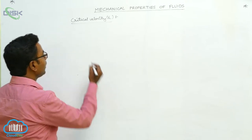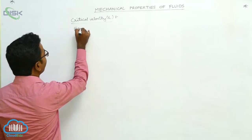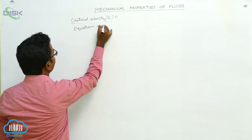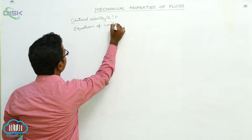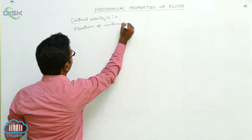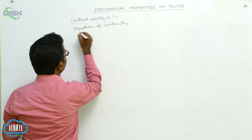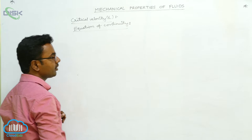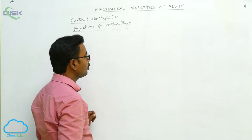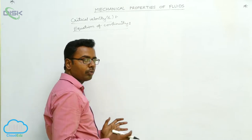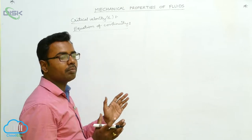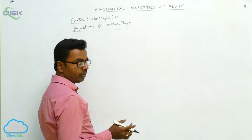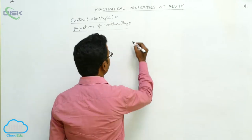Next we discuss the equation of continuity. To derive it, let us consider a tube of flow. A tube of flow means it is a bundle of streamlines — a group of streamlines is called a tube of flow.